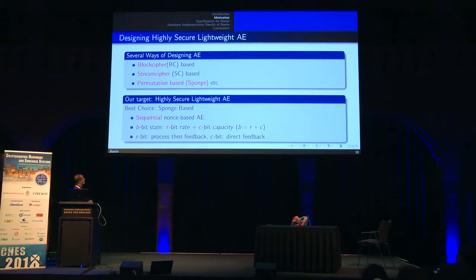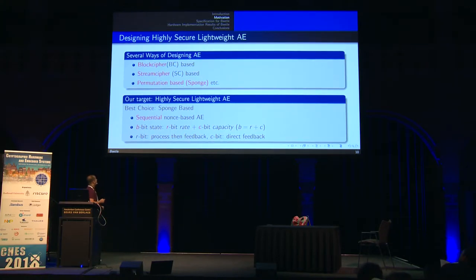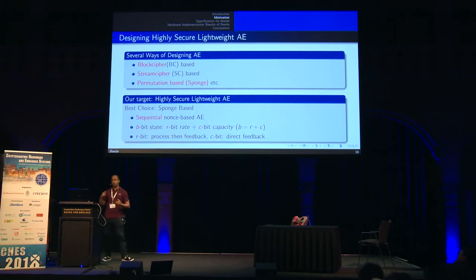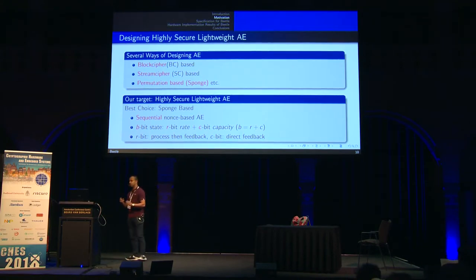There are several ways of designing authenticated encryption modes: block cipher-based, stream cipher-based, or permutation-based. Permutation-based modes evolved with the design of the sponge construction. We chose a sponge-based construction because we believe it is an all-in-one construction — not only for authenticated encryption, but also for hashing. In addition, it only uses storage for storing the permutation state and does not have any additional storage.